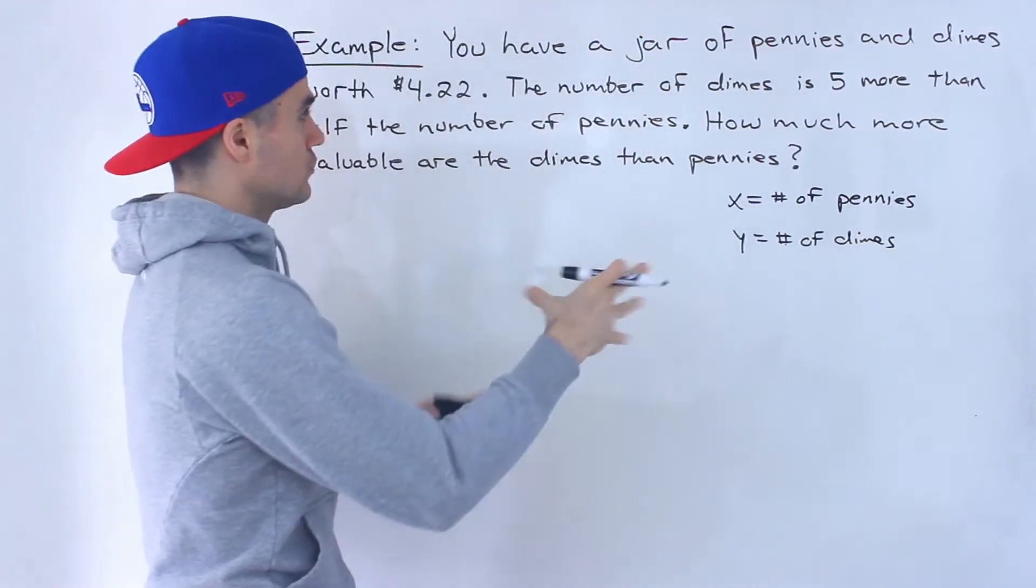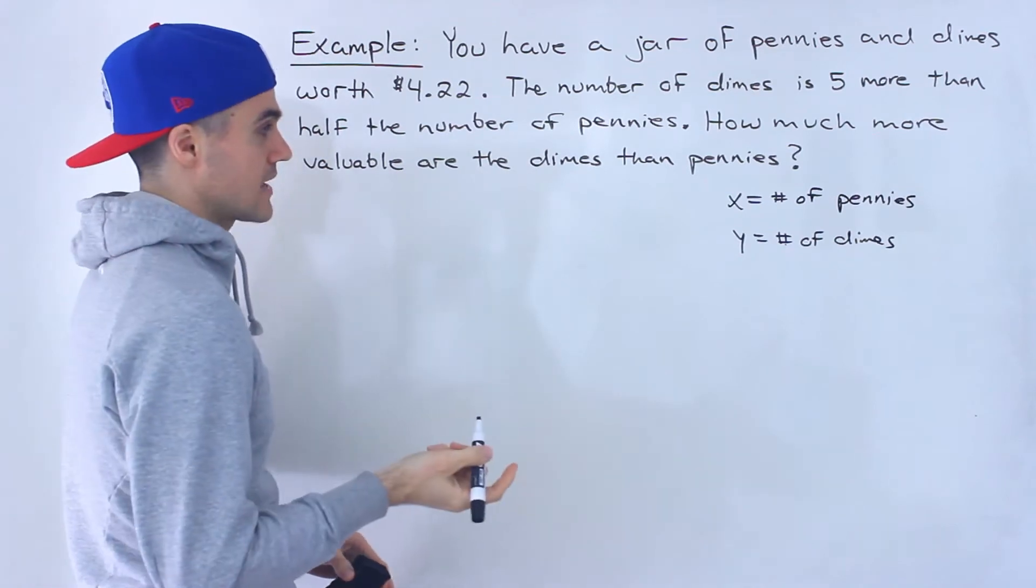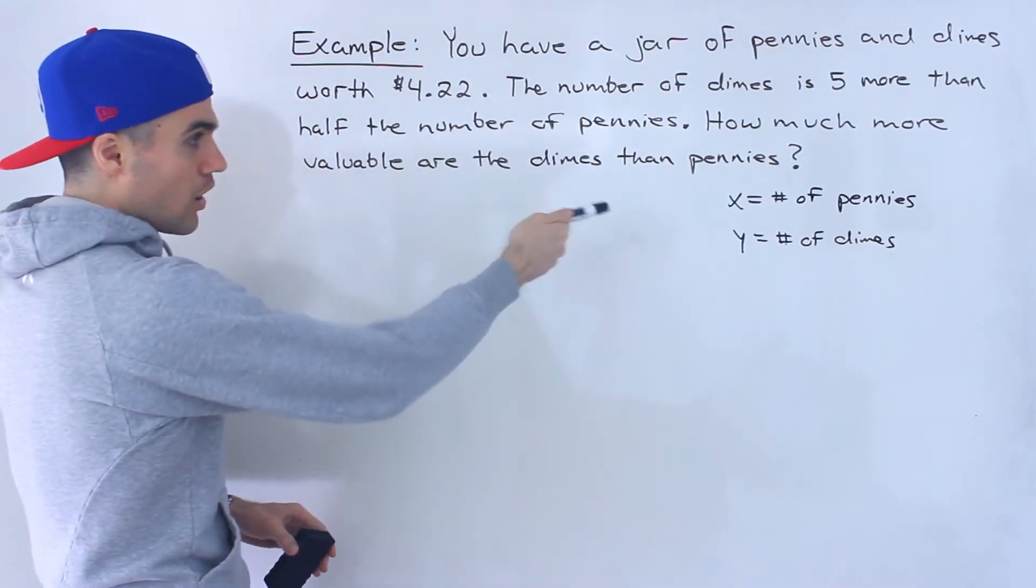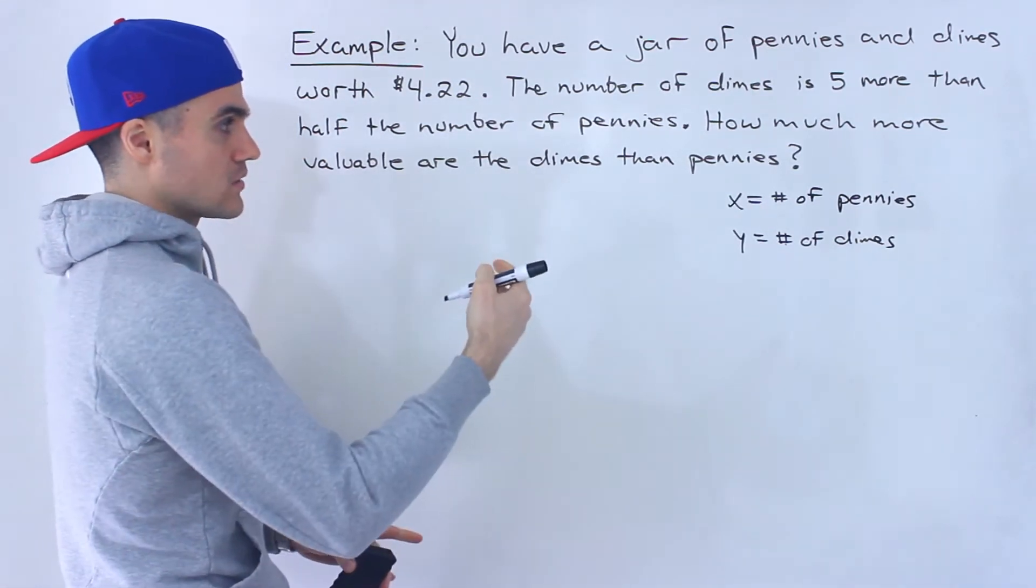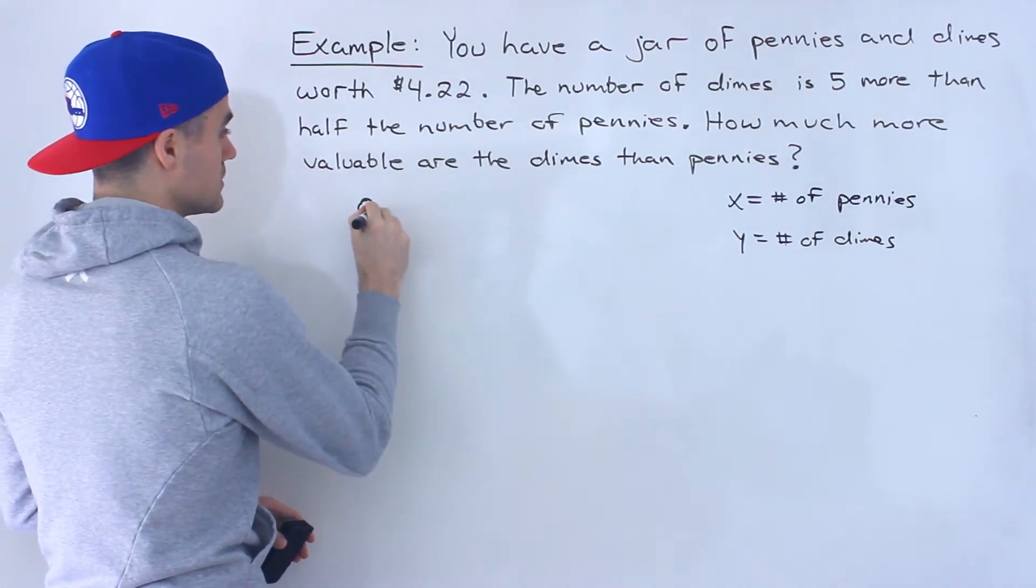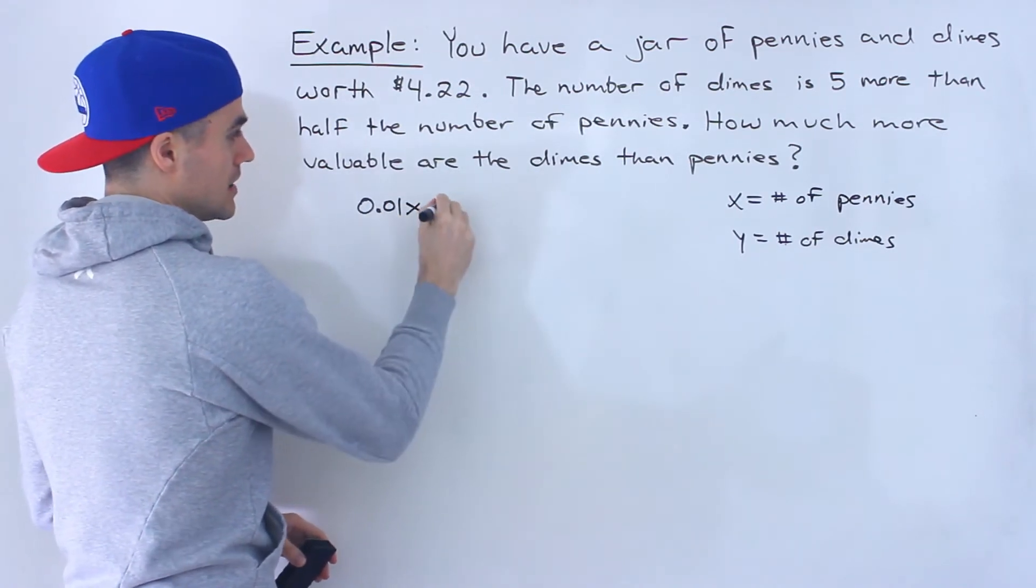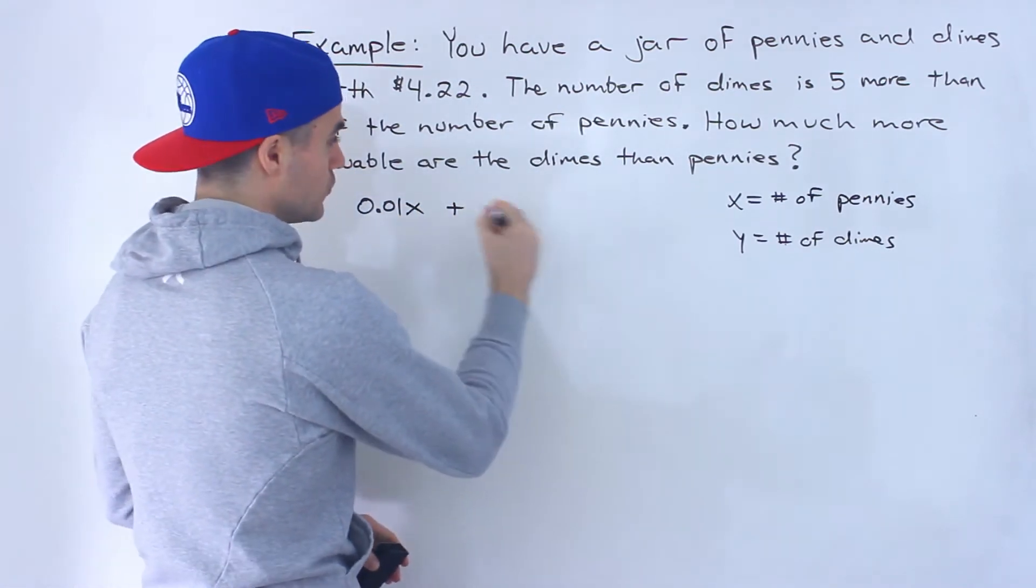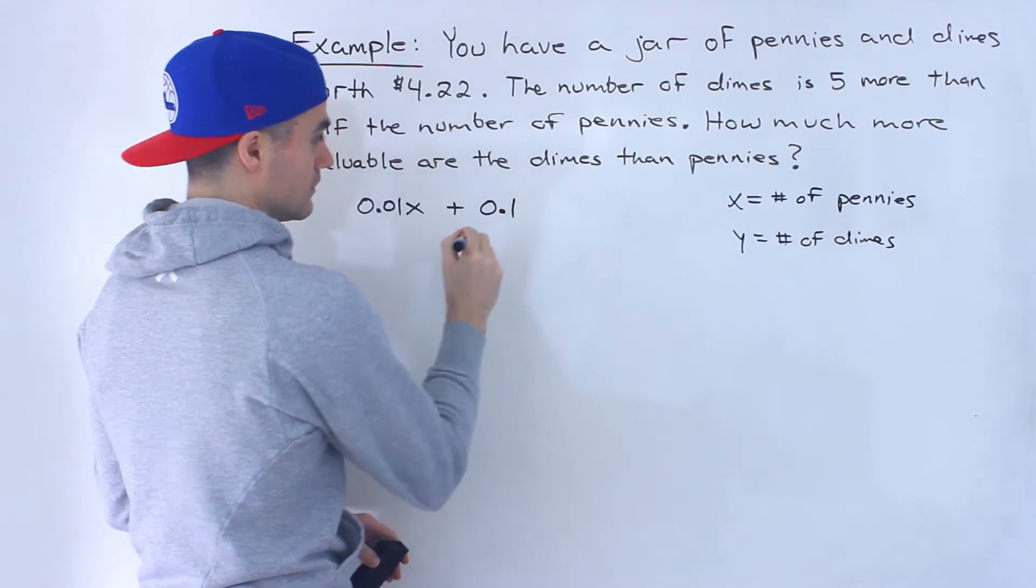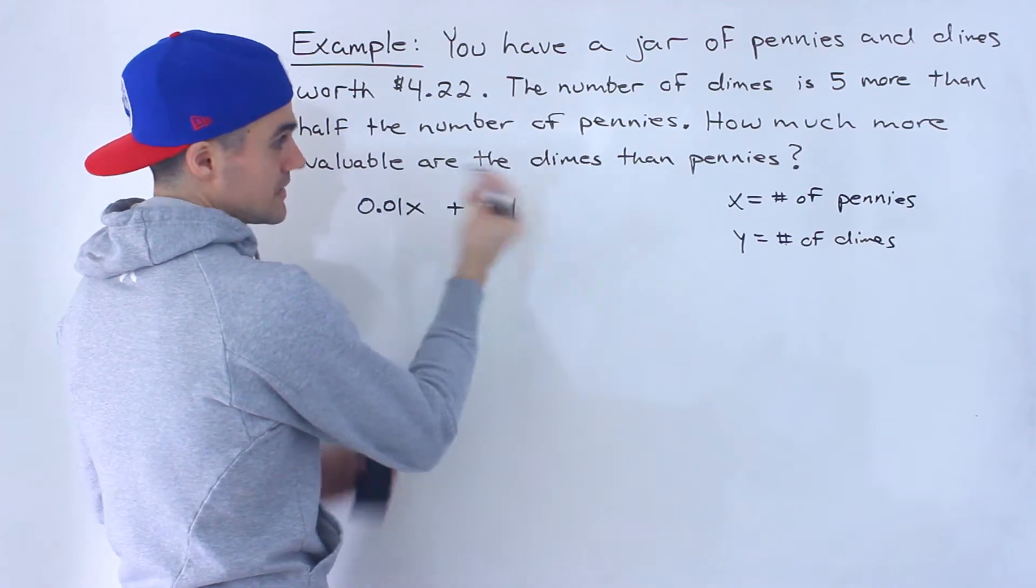Now notice the total value in the jar is $4.22. So in dollars, what's the value of one penny? Well it's 0.01, and then we would multiply by the number of pennies, plus the value of a dime which is 0.1, right, this is in dollars because this $4.22 is in dollars. So 0.1 times the number of dimes, and then the total of that has to equal 4.22.